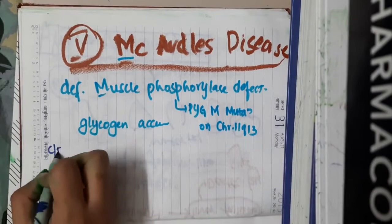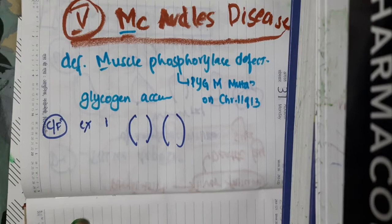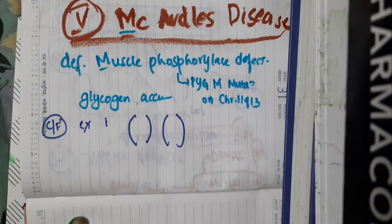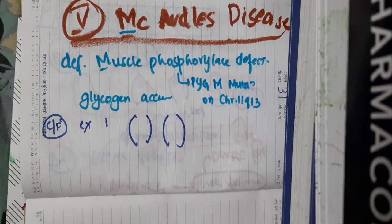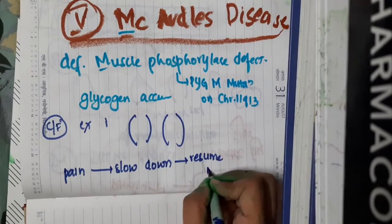Looking at the clinical features, all the symptoms are mainly in the muscles. The patient suffers from exercise intolerance, and there will be muscle cramps and muscle pains. The characteristic feature is a first appearance of muscle pain — the patient slows down, and afterwards resumes exercise with more ease. There is initial pain, then they slow down, and then they resume the exercise without feeling as much pain.